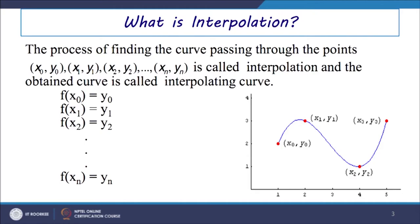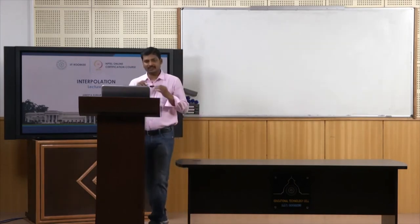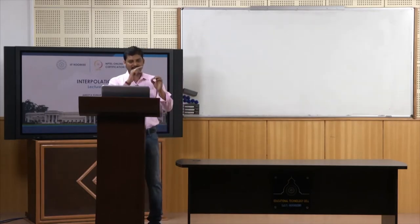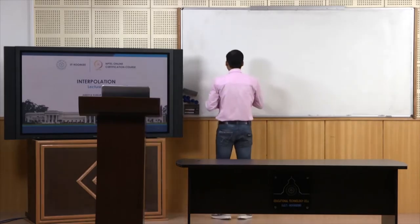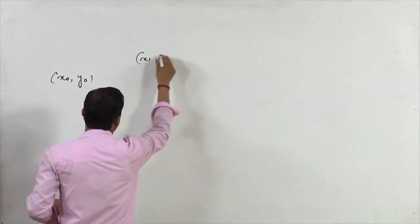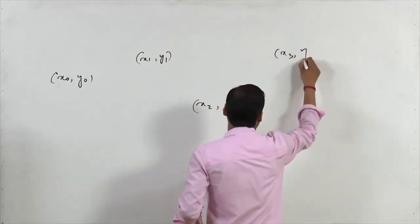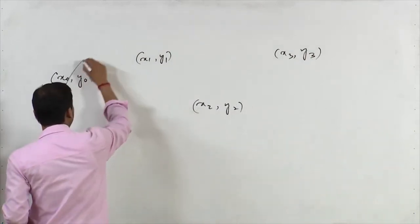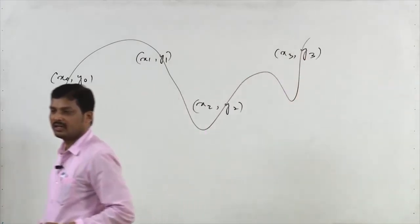Interpolation is nothing but if we have a set of data points and a curve is passing through this set of data points, it is called interpolation. Suppose we have data points like x0, y0; x1, y1; x2, y2; x3, y3 — then if we plot a curve passing through these points, this curve is called the interpolating curve.